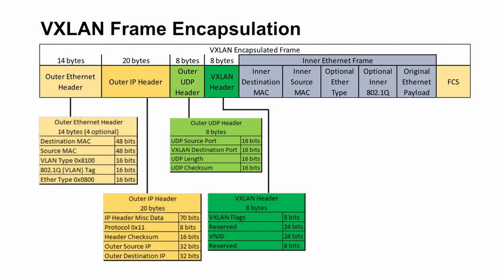So let's take a look at the VXLAN frame itself. What I've got here is a picture of an encapsulated VXLAN frame. To start with, you've got the outer Ethernet header. This is identifying the source and destination MAC address as you're doing a layer 2 hop within your layer 3 network — so a device-to-device hop.